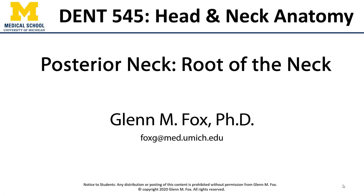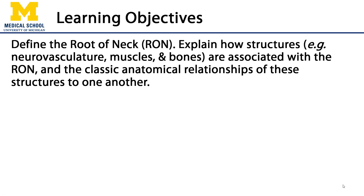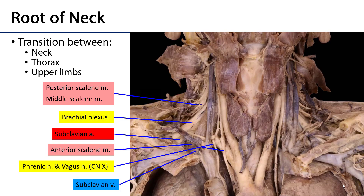Hi! Let's talk about the root of the neck. In this video we'll discuss the root of the neck, explaining how various structures such as neurovasculature, muscles, and bones are associated with it, and discuss some classic anatomical relationships among these structures. The root of the neck is a transitional area between the neck superiorly, the thorax inferiorly, and the upper limbs laterally.